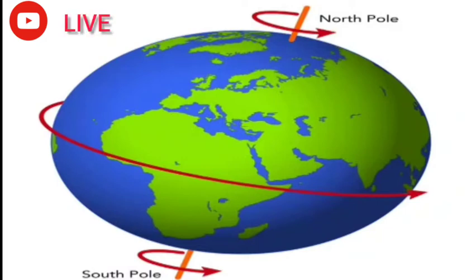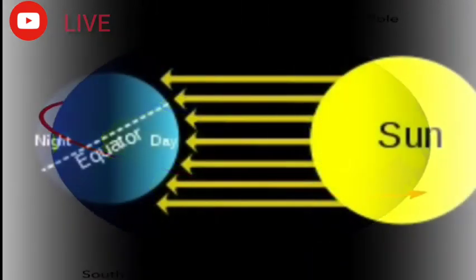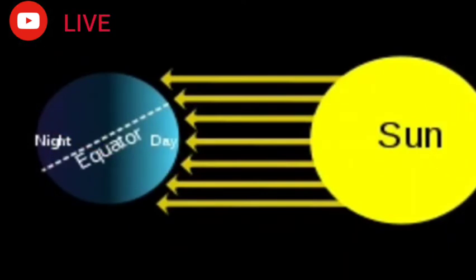We saw earlier in the classes that when the solar rays strike the earth's surface, they fall straight on some portions which face the sun directly, and fall slanting or making an angle as you move away from that portion. The sun rays fall on the equator straight, so the equatorial region receives more temperature and is hotter.